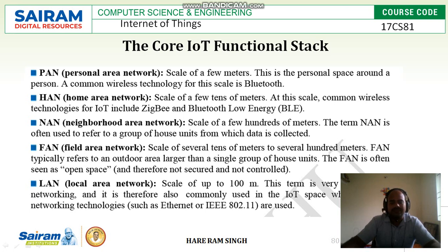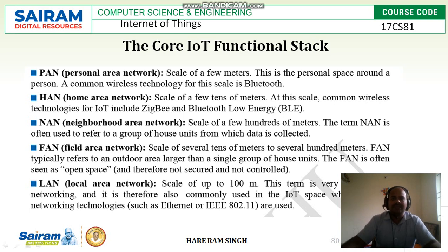Then there is LAN, the Local Area Network, which everyone knows from computer networking. Its range is up to 100, 200, or 300 meters — within a building or similar environment. This term is very common in networking and is therefore also commonly used in the IoT space. Standard field technologies like Ethernet or IEEE 802.11 operate as a local area network.